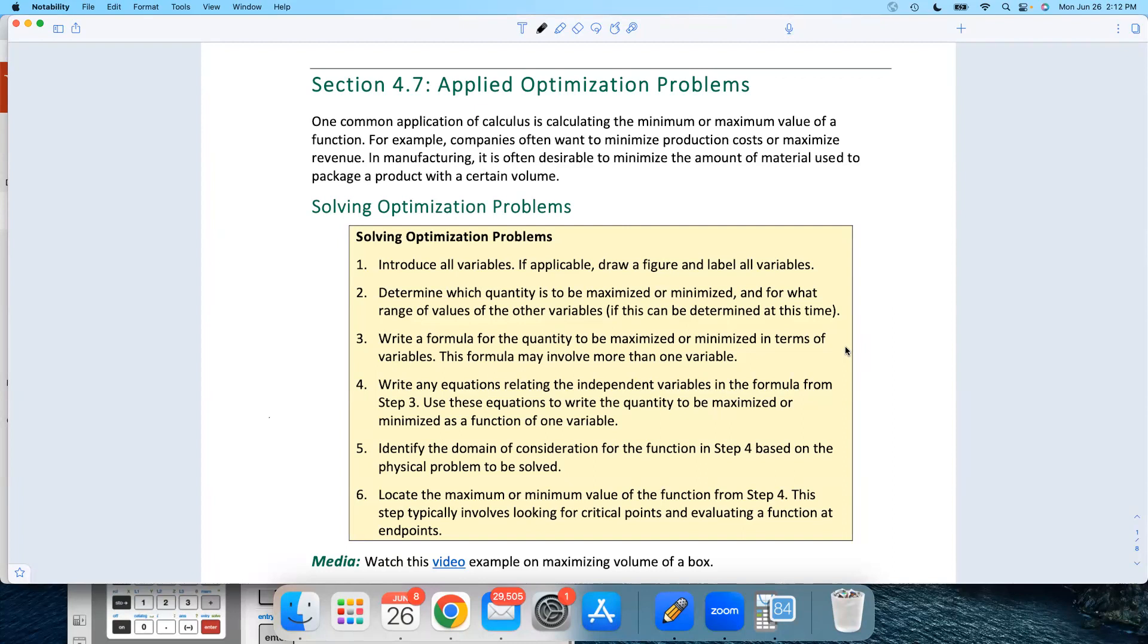Then once you do that, every single time, you're going to take the derivative, set it equal to zero. That's your critical point. Check your endpoints. Check your critical point. The extreme value theorem says that you're going to have a maximum and a minimum someplace on that interval, and both of those will occur at either the endpoints of that interval or at your critical points. Remember, critical points can also happen where the derivative does not exist. We need to include those as well.